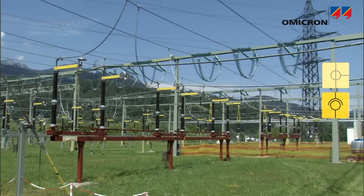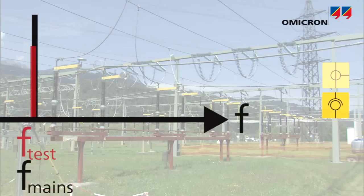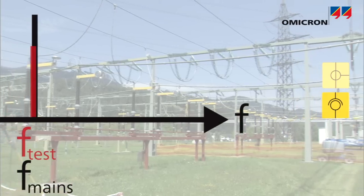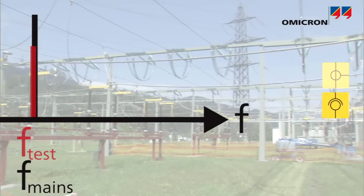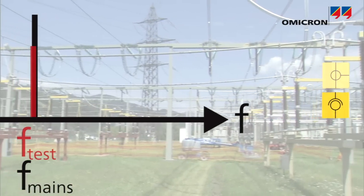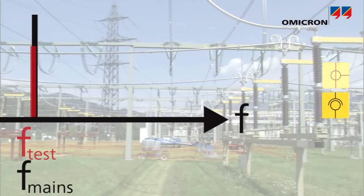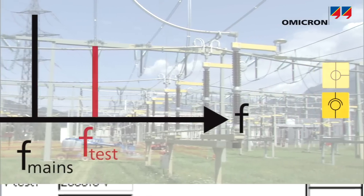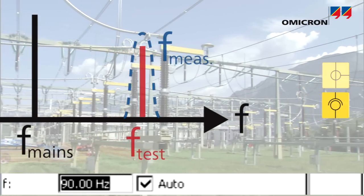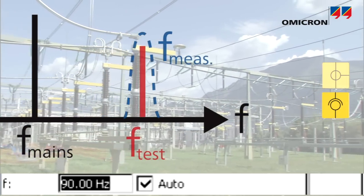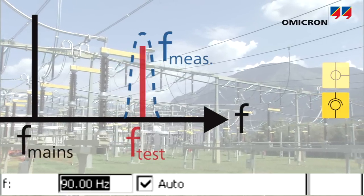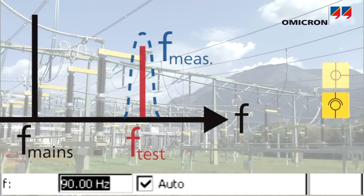The VT's secondary signal may be difficult to measure if it is small in amplitude or when neighboring parts of the substation interfere with it. Interferences can be filtered out by injecting a test voltage with a frequency different from the power system frequency and selectively measuring at test frequency.